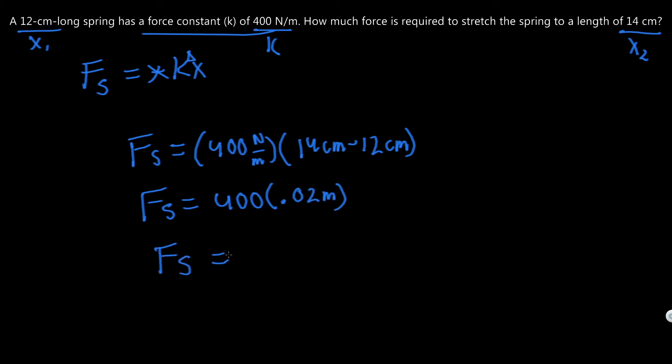And F_s equals - you simply calculate that - 400 times 0.02, we get 8 newtons.